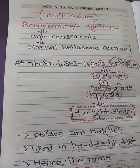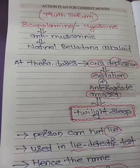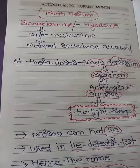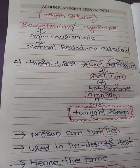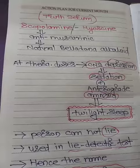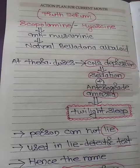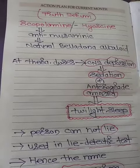Scopolamine produces all the actions of atropine. At therapeutic doses, it produces CNS depression and sedation.